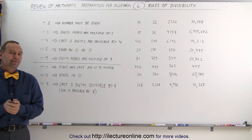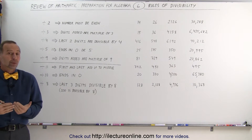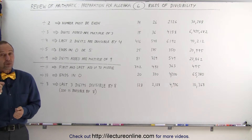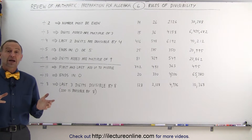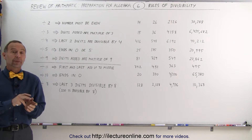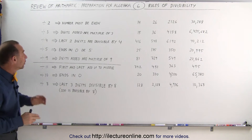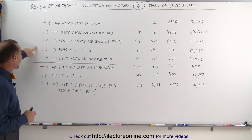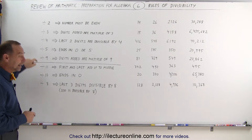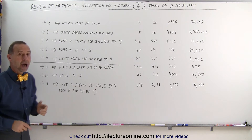Welcome to Electronline. Let's take a look at what we call the divisibility rules. It's actually really handy if you know how to figure out if a number is divisible by another number, especially the numbers 2, 3, 4, 5, and 9, and we'll also take a look at 11, 10, and 8.